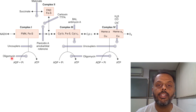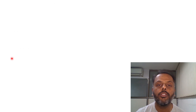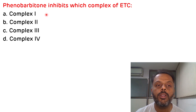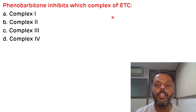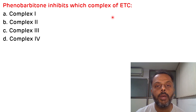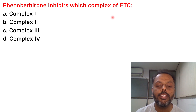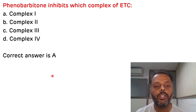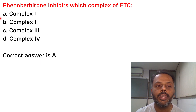Now the correct answer to the multiple choice question: phenobarbitone inhibits which complex of the ETC? Phenobarbitone belongs to the barbiturate category and inhibits complex 1, that is from NADH to coenzyme Q. So the correct answer is A.